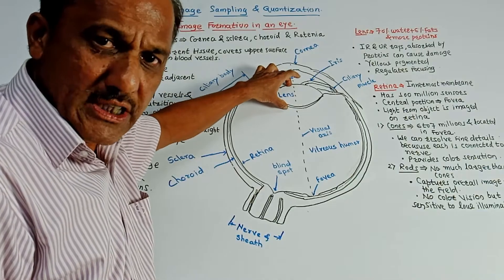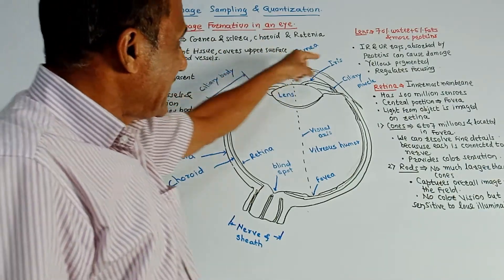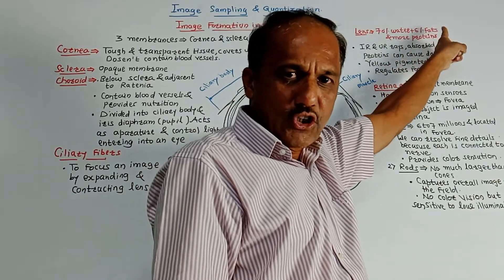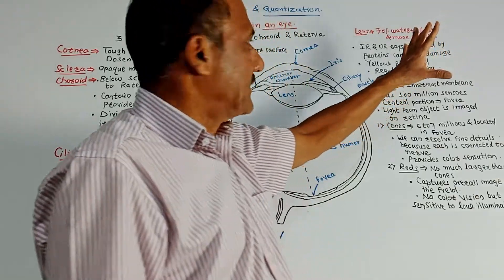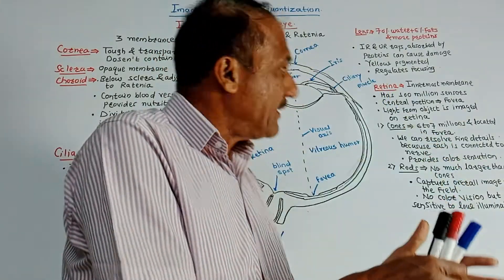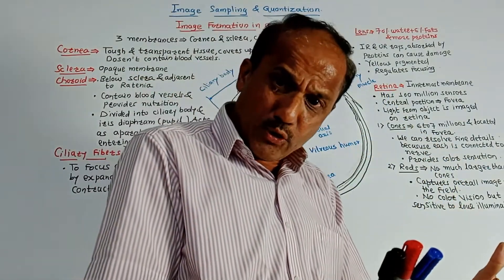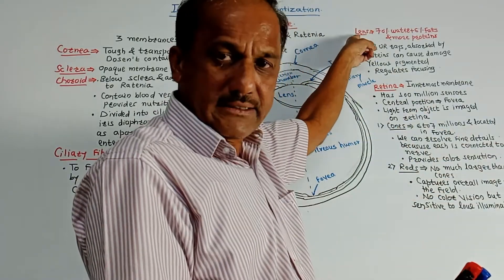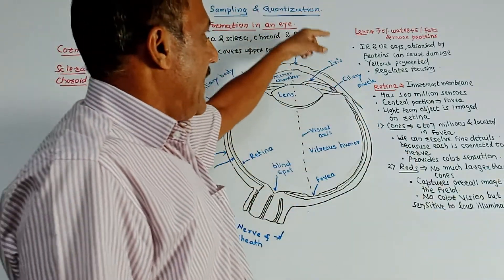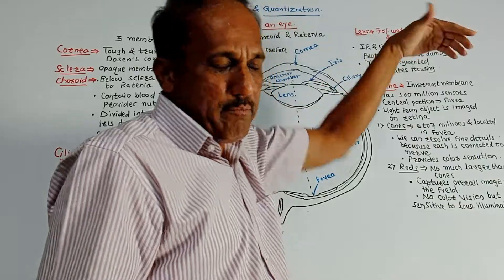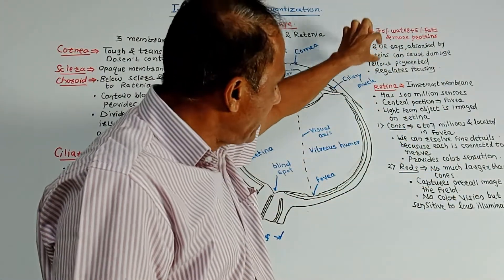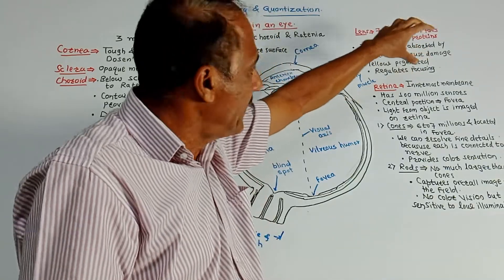The lens is basically consisting of 70% water, 6% fat, and a large amount of proteins. Whenever infrared or ultraviolet rays fall on the retina, they are absorbed by the protein material in the lens and can cause damage to the eye. The lens is yellow pigmented — pigmentation means heavy color concentration — and it is used to regulate the focusing of an object.